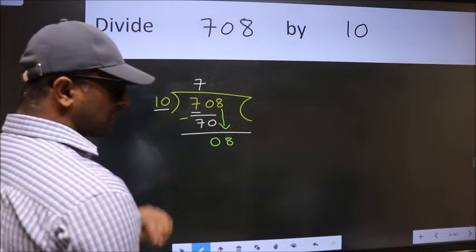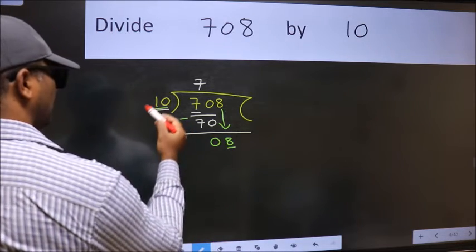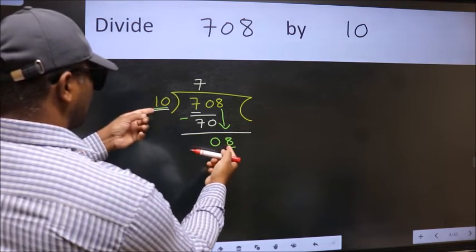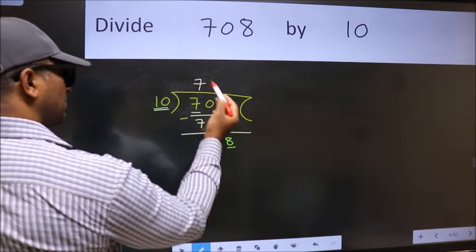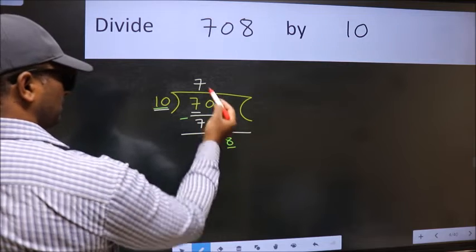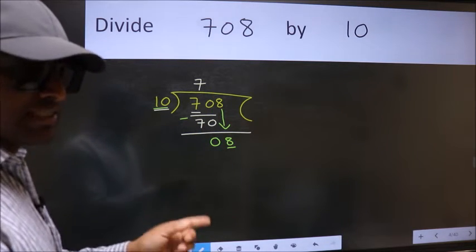And the mistake is this. Here we have 8 and here 10. 8 is smaller than 10. So what many do is they directly put dot, take 0. Which is wrong.